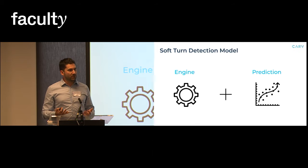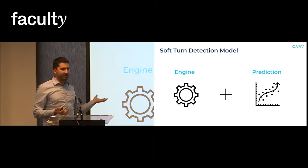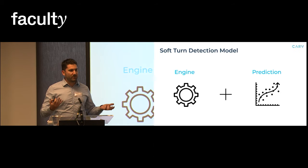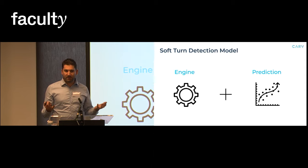This model uses the current turn detection engine that CARV is using, but at the same time you can feed in a prediction model. The prediction model runs simultaneously and doesn't require a massively trained model, but it can be quite a lightweight model.